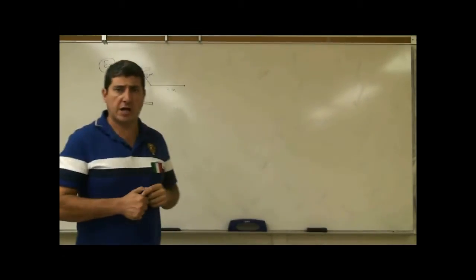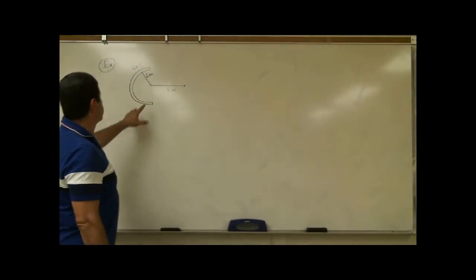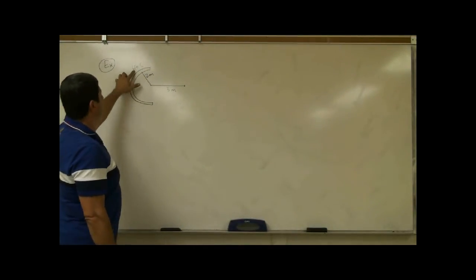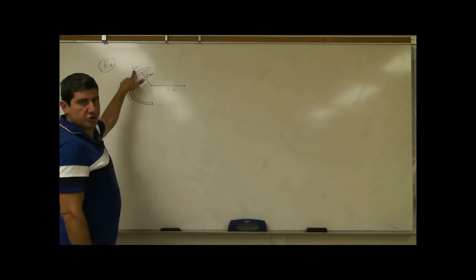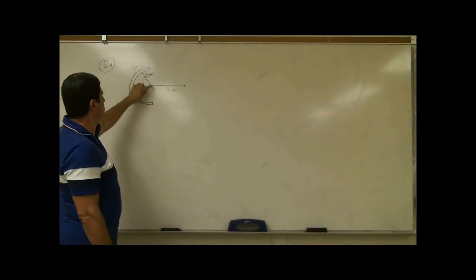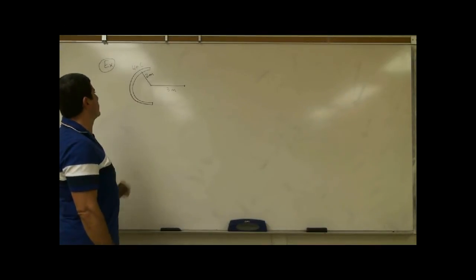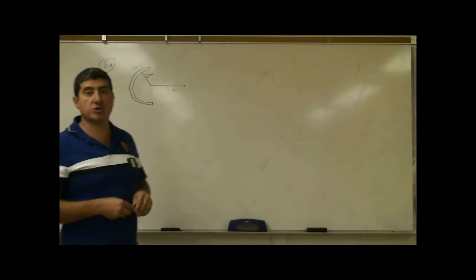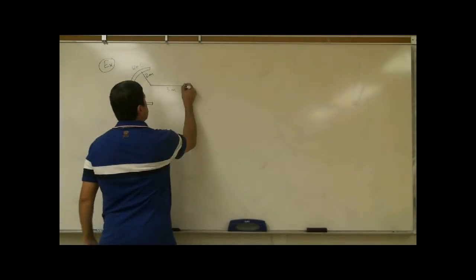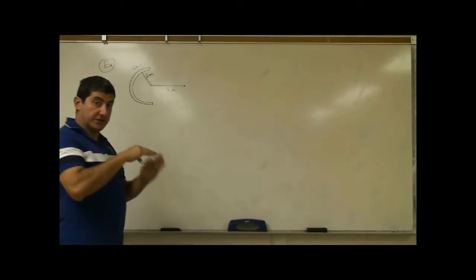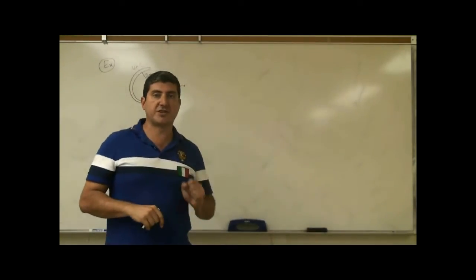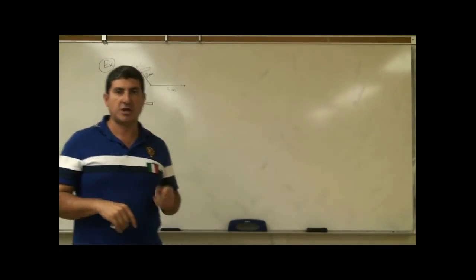We're going to do a problem with a semicircular rod. The rod has a total charge of 4 nanocoulombs and the radius of the rod is 2 meters. We want to find the potential it creates 3 meters along the central axis, 3 meters from the center of the semicircle.